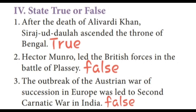True or False. First one: after the death of Alivardi Khan, Sirajuddalla ascended the throne of Bengal — answer is True. Second one: Hector Munro led the British forces in the Battle of Plassey — False. The correct answer is Robert Clive. Third one: the outbreak of the Austrian War of Succession in Europe led to the Second Carnatic War in India — answer is False.